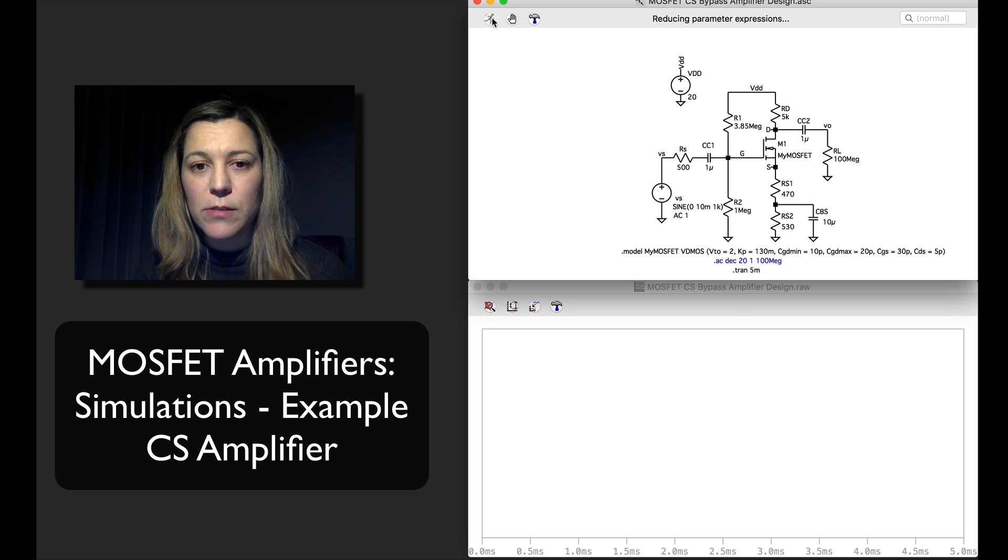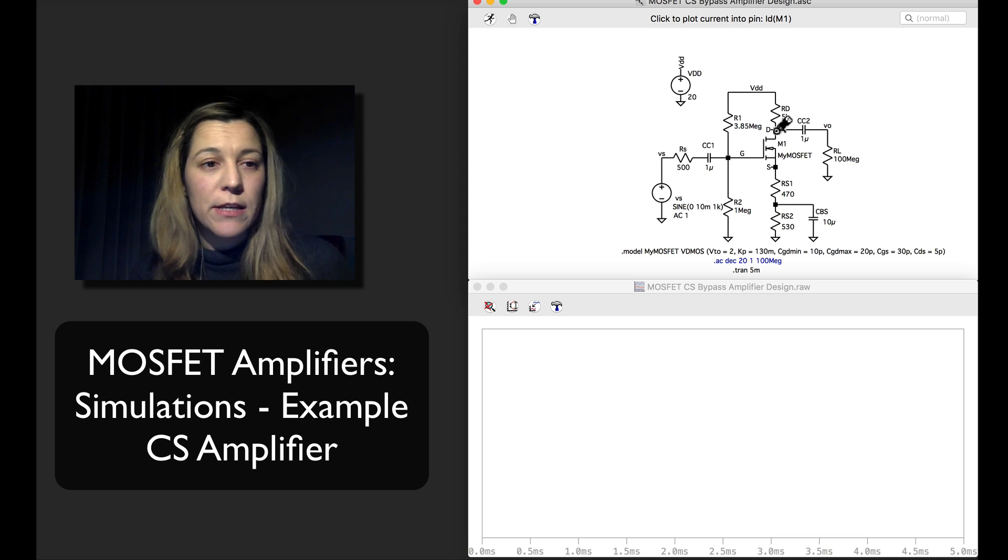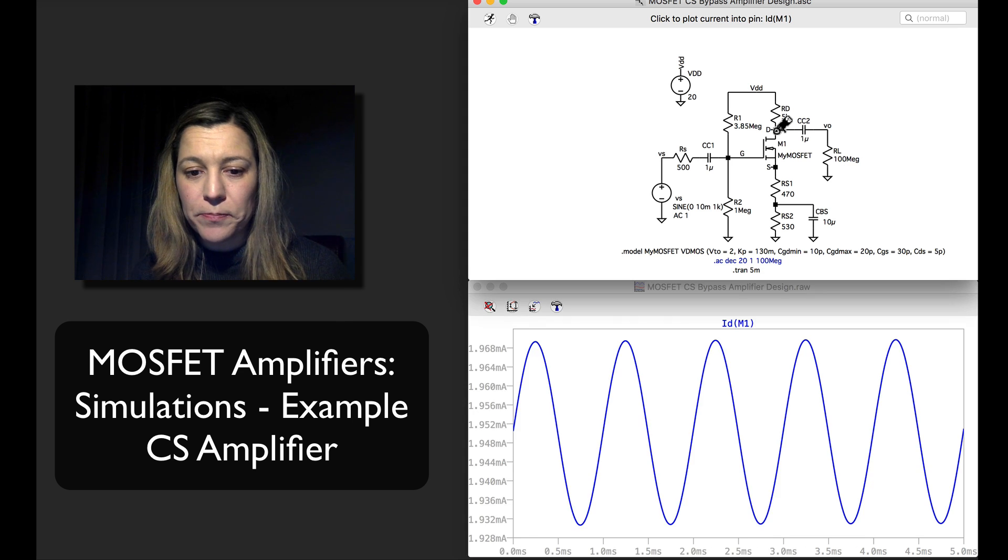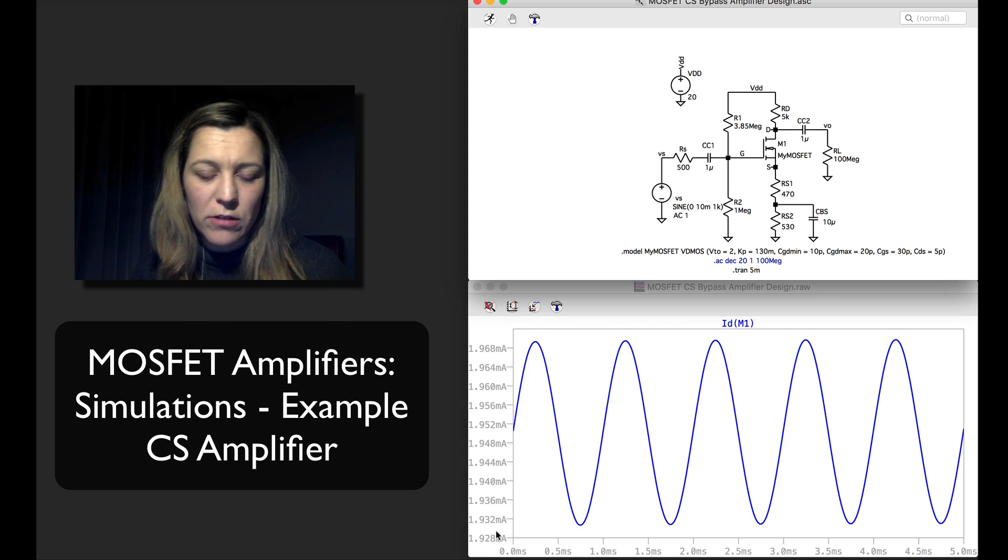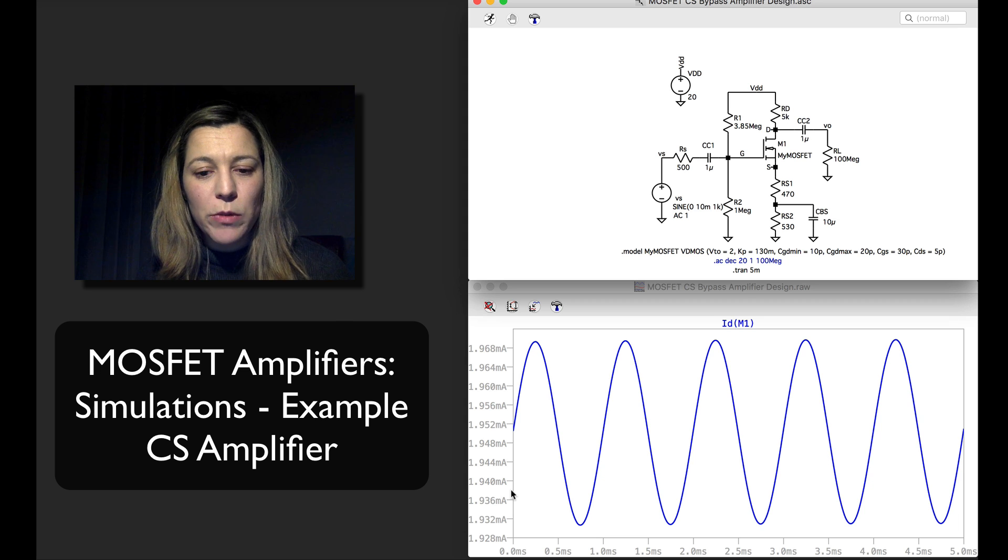So I'm gonna run simulation and I'm going to first measure some of the bias points. The first thing I want to know is about my current which I have designed to be 2 milliamps. And so if I look at these values I can see it is 1.9 so fairly close to 2 milliamps.